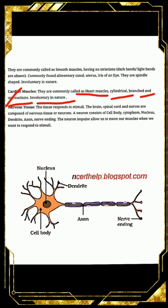Last is nervous tissue. This tissue responds to stimuli — stimuli meaning any change in our external environment that our body receives, and according to which we give a response. The brain, spinal cord, and nerves are composed of nervous tissue. The brain, spinal cord, and nerves in our body are made of neurons — nervous tissue that carries messages from one place to another. A neuron consists of a cell body (also called cyton).